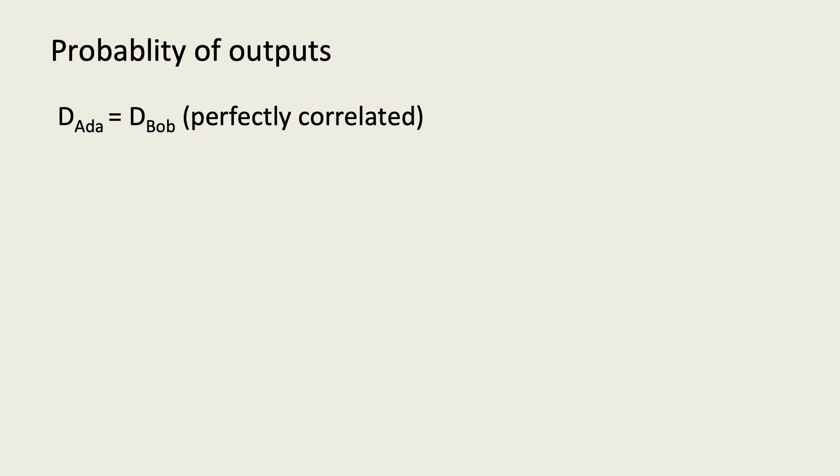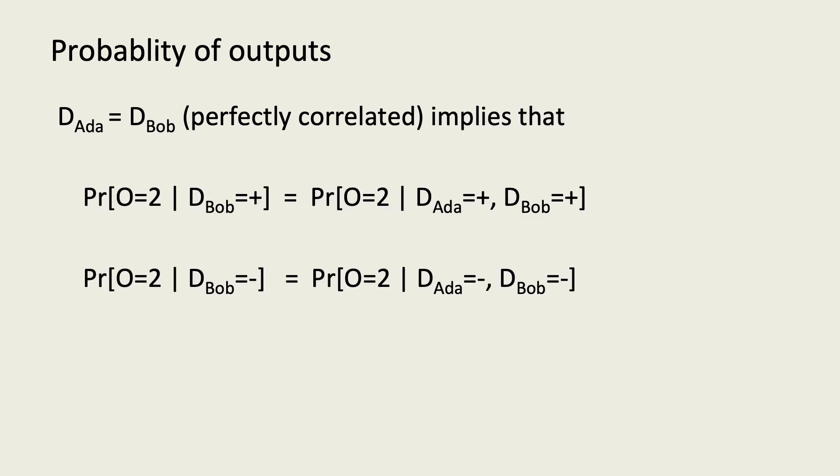In this setting, conditioning on just Ada's data point is the same as conditioning on both, since you can infer the second from the first. Given that, we can easily calculate the probability of seeing an output given just one of the inputs from the table we calculated earlier. What we find is that the two probabilities differ by a factor of 9, not just 3, since effectively two data points change between them, not just 1.